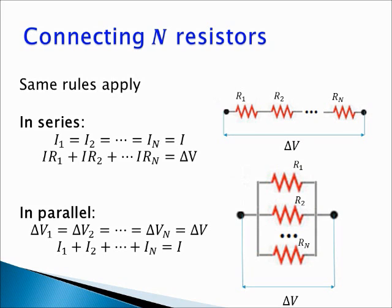When we connect resistors in parallel, all their positive terminals are connected to the same point and similarly for the negative terminals. In this case, the potential differences across each resistor are the same, while the currents entering the junction must satisfy I1 + I2 + I3 + ... = I, the current that enters the junction point.